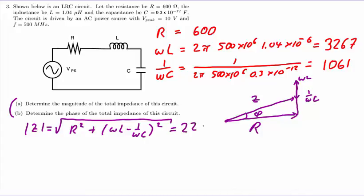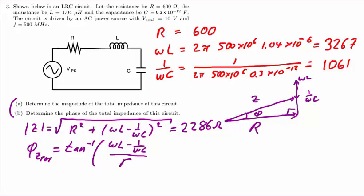For the phase of the total impedance, given a right triangle in our diagram, we take the inverse tangent of the opposite side — whose length is omega L minus 1 over omega C — divided by the adjacent side R. Plugging in the values, we get 74.8 degrees. This indicates that omega L minus 1 over omega C is significantly larger than R, since the angle phi is greater than 45 degrees.